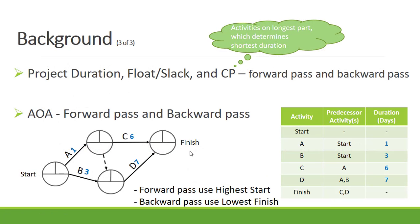We use the forward pass and backward pass to calculate our project duration, our total float, and the critical path of the project. The critical path is the activities on the longest path, which determines the shortest duration of the project. Let's have a look at a small example to explain the forward pass and backward pass.